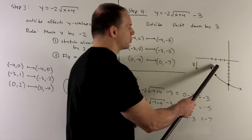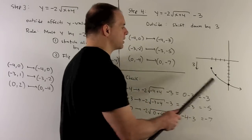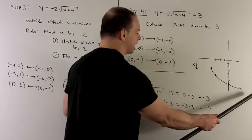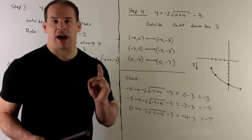And then our 0 minus 4, which is here, goes down by 3. We connect the dots, and that's going to be our final graph.